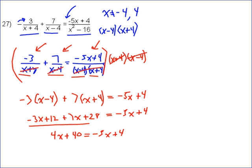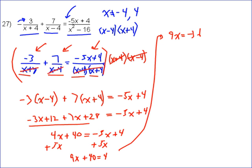Now it's an easy solve. Just get all the x's on one side, so add 5x to both sides. That gives us 9x + 40 equals 4. So then you're going to subtract 40 from both sides, so you get 9x equals -36. Divide both sides by 9 and you get x equals -4.